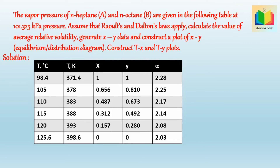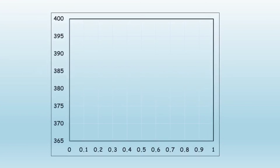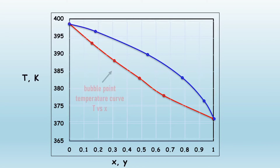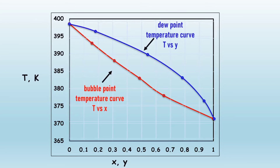Using this data, we can construct the T-X-Y plot. On the X-axis we take X and Y values, and on the Y-axis we take temperature. The liquid represented by any point on the lower curve is at its bubble point, so the lower curve is called the saturated liquid curve, or bubble point temperature curve, or T versus X plot. Condensation starts at any point on the upper curve, so it is called the saturated vapor curve, or dew point temperature curve, or T versus Y plot.